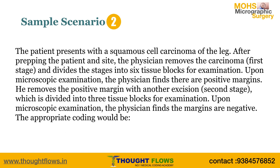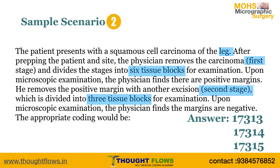For the second sample, the patient presents with cancer on the leg. The surgeon performed the first stage of removal, dividing it into six tissue blocks. After identifying positive cancer margins, a second stage of removal was performed and divided into three blocks. The answer is 17313 for the first stage, 17314 for the extra stage, and 17315 for the one extra block in the first stage.